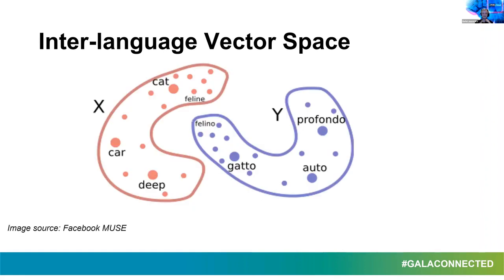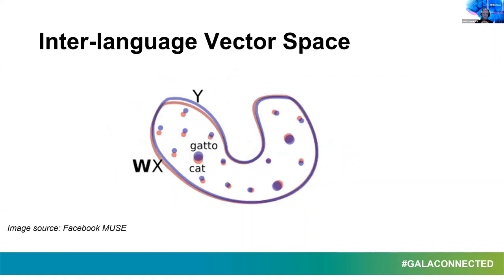This is an example showing the vector space for the English language (X) and the vector space for the Italian language (Y). Each dot represents a word in the English or Italian vector space. These vector spaces exist separately — they don't have anything in common. But after the alignment of those vector spaces, the vector spaces now overlap, and those dots representing words are now close to each other.